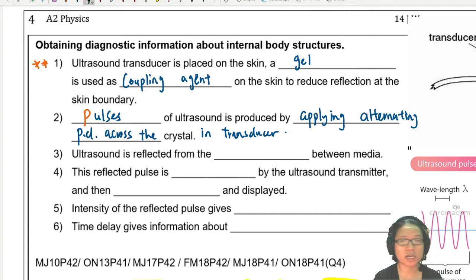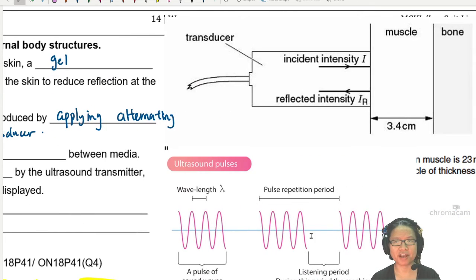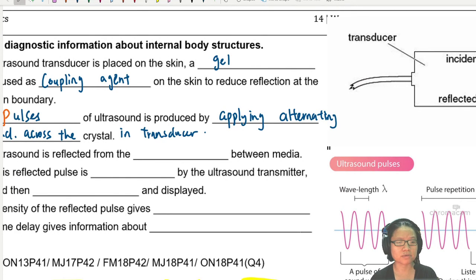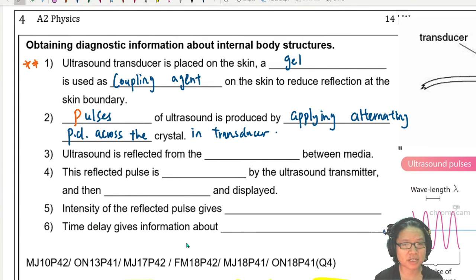Now the ultrasound will reflect. We have already discussed the transducer and we are ready for the ultrasound to reflect. Think about this picture again. The ultrasound will enter the muscle and then reflect at the bone boundary. It's that reflection between media. The media here is muscle and bone and we are going to pick up the reflected pulse. So the ultrasound is reflected from the boundary between media. This reflected ultrasound is detected by the ultrasound transmitter, which is also the transducer.